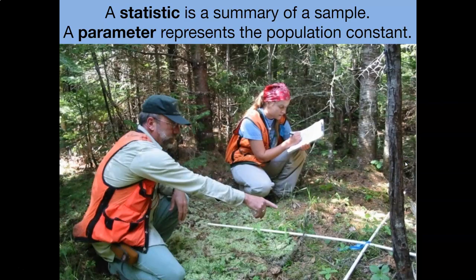A statistic represents some summary of a sample, while a parameter represents some population constant. An easy way to remember this is that the letter S stands for sample and the letter P stands for population — statistics are samples, parameters are populations.